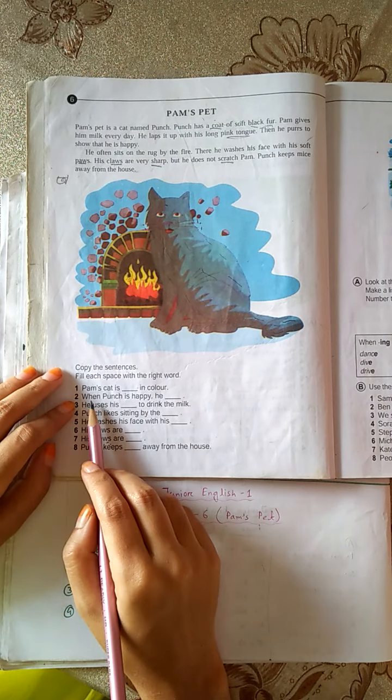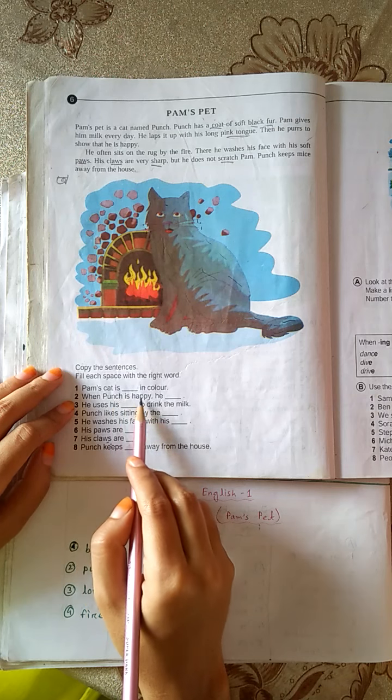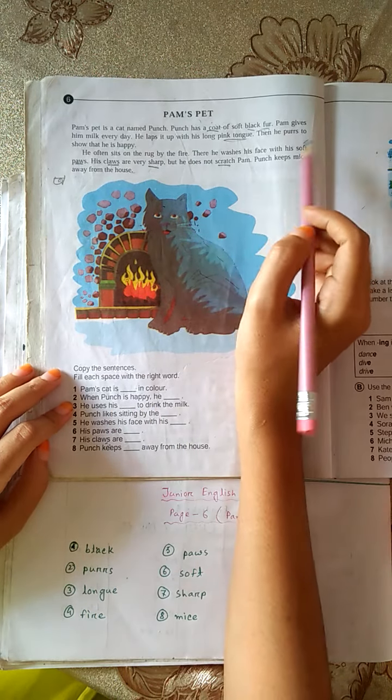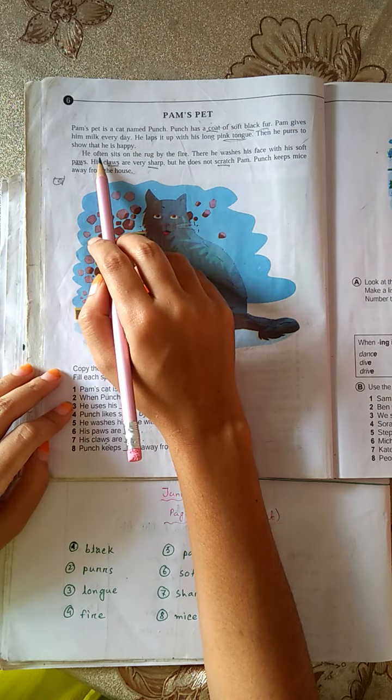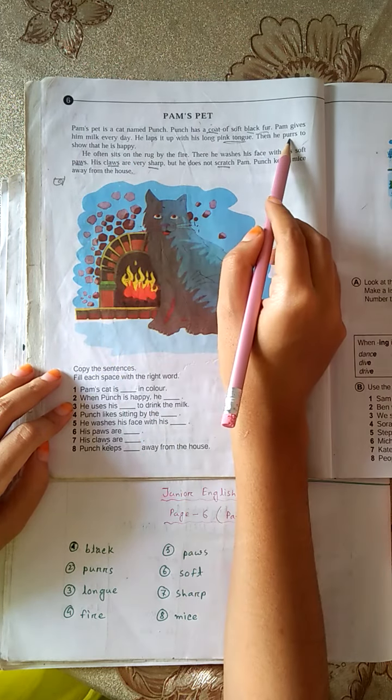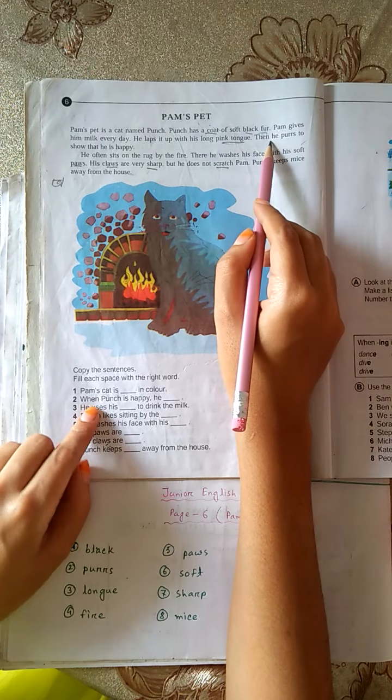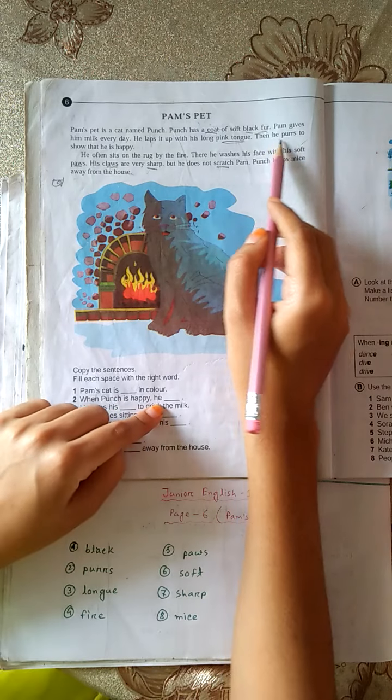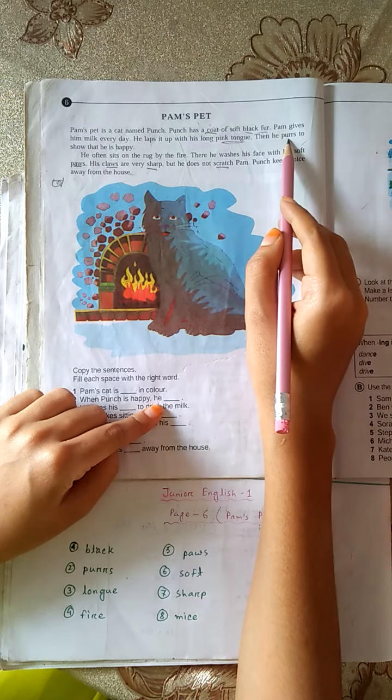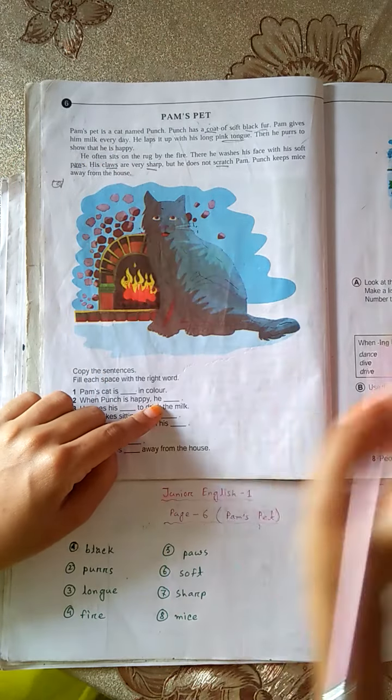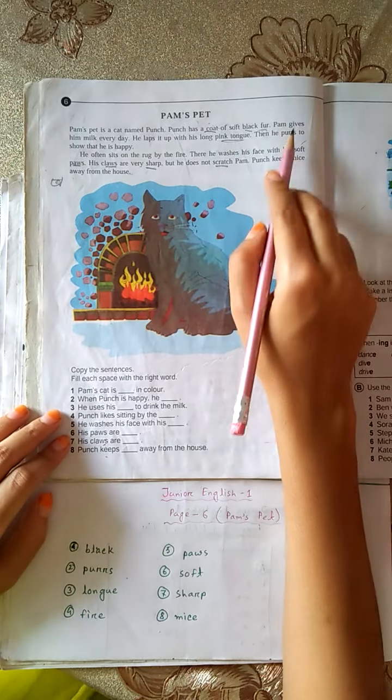2. When Punch is happy, he purrs. To show that he is happy. The answer will be purrs.